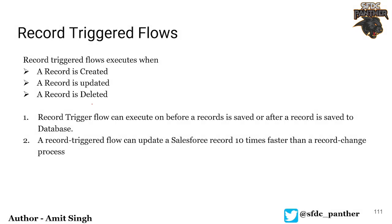When we talk about record-triggered flows, as the name indicates, this trigger executes whenever any DML is made on a particular record. DML can be a record is created — for example, an account record is created, or an account record is updated, or an account record is deleted. These are the three options we can have while developing a record-triggered flow. These DML operations can occur in two parts: before the record is created and after the record is created.